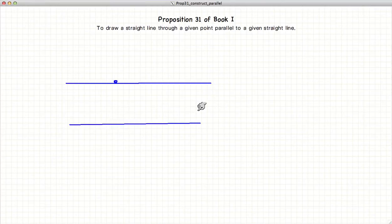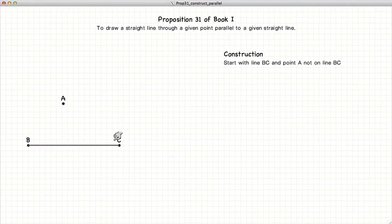So let's begin. First we'll draw our line AC and we have our point A. Now our goal here is to draw a line through A such that it is parallel to BC.